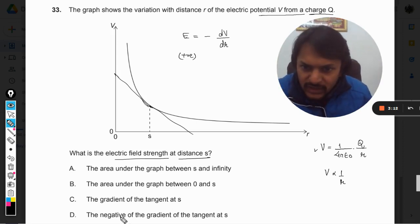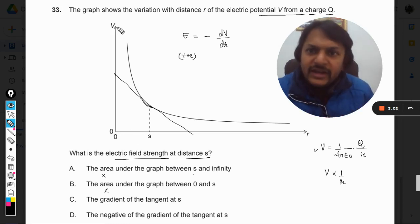Okay, so D is the area under the graph between s and infinity? Not at all. It's not area because we would find area by multiplying voltage with the distance and we are not multiplying it. The gradient of tangent at s, the negative of the gradient, so answer is D. It is the negative of the gradient.